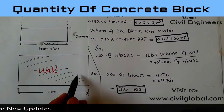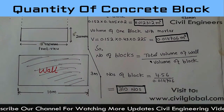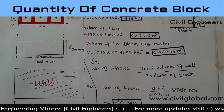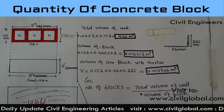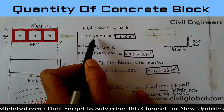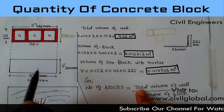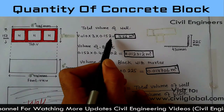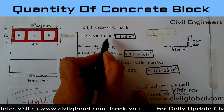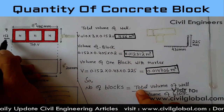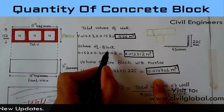Now I will find out the quantity for the concrete block in this wall. This is the wall which length is 10 meter and height of the wall is 3 meter. First of all I will find out total volume of wall. V is equal to 10 meter (length) × 3 meter (height) × 0.152 meter (width/thickness of the wall). This gives us a volume of 4.56 cubic meters.